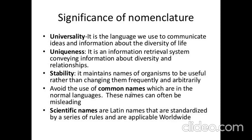Scientific nomenclature is a language we use to communicate ideas and information about the diversity of life. It should be unique. It is an information retrieval system to convey information about diversity and relationships. It should be stable, and it maintains names of organisms to be useful rather than changing them frequently and arbitrarily.